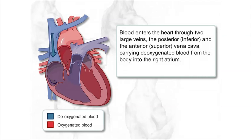Blood enters the heart through two large veins, the posterior and the anterior, carrying deoxygenated blood from the body into the right atrium.